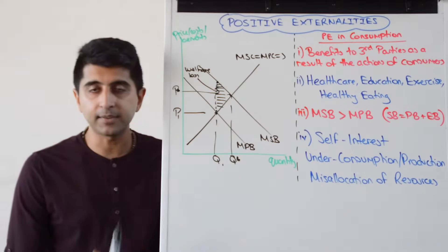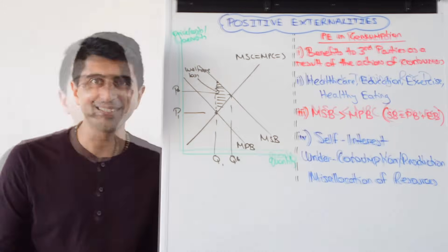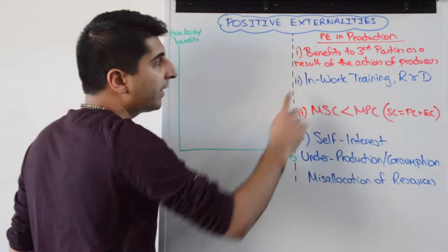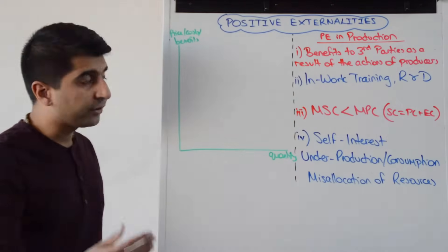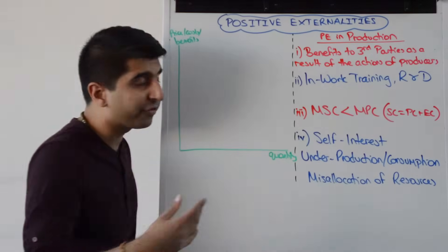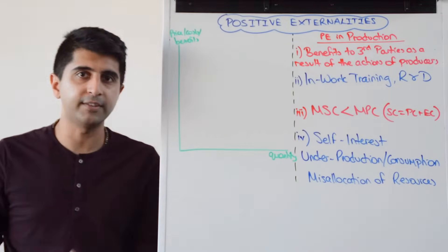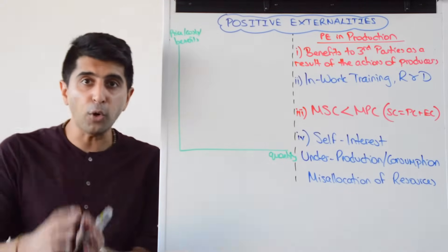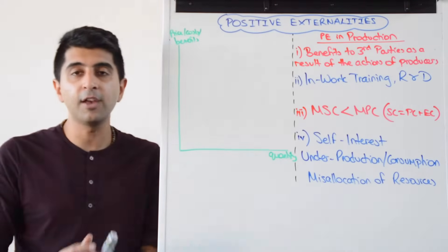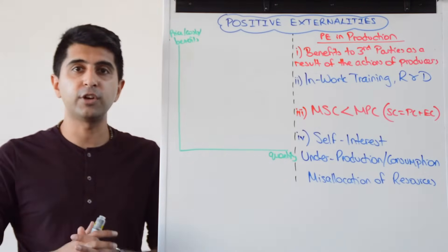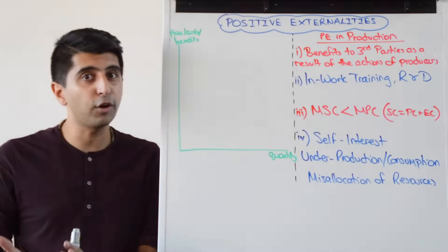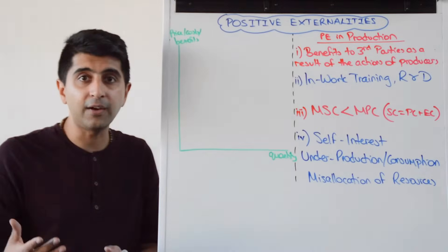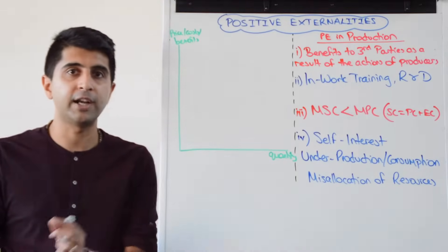So that's positive externalities in consumption. Let's now look at positive externalities in production. Positive externalities in production are simply benefits to third parties as a result of the actions of producers. So producers might be offering very good, high-quality, in-work training schemes. The third party that could benefit are other firms who are able to poach workers who have benefited from in-work training schemes without having to offer those schemes themselves — benefiting from lower costs of production, able to pay workers a slightly higher wage without incurring the very high cost of in-work training themselves.